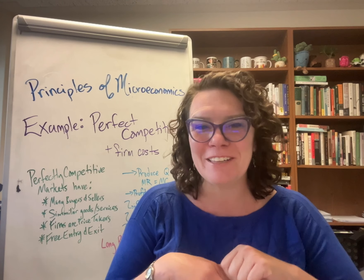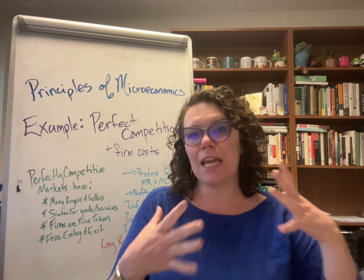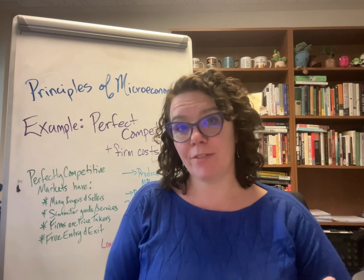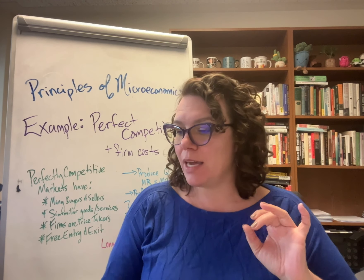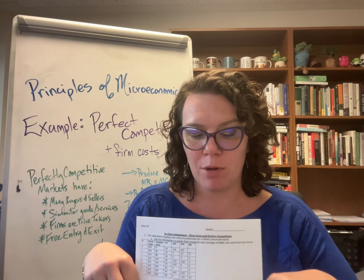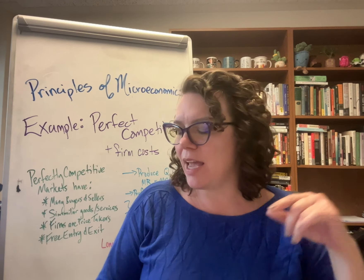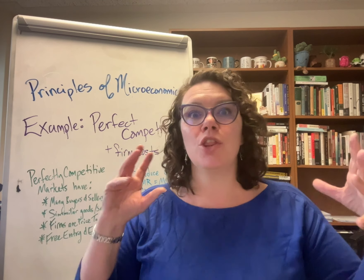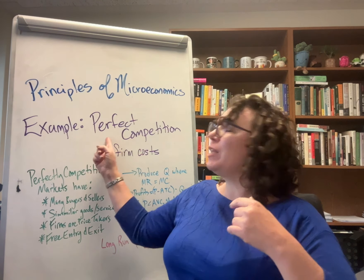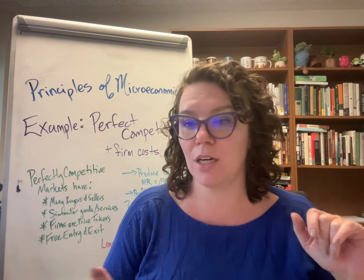Hi everybody, welcome back. Today I want to go over an example problem set looking at how firms behave in perfectly competitive markets. This is a paper that we went through in class in participation in Econ 1B and it's a good refresher of those costs of production — those firm cost curves — but really what we're looking at is how firms behave in perfectly competitive markets.